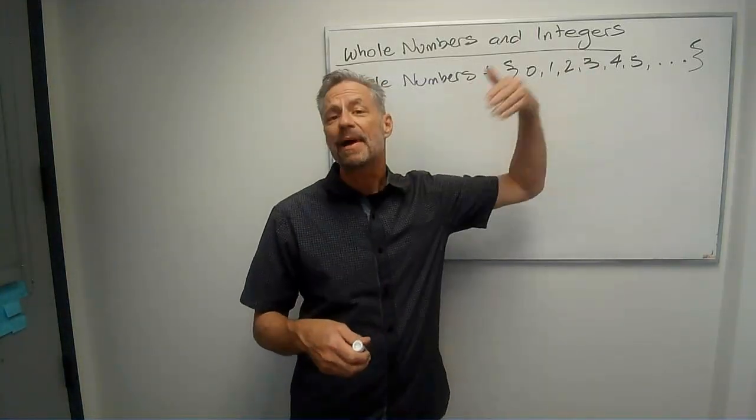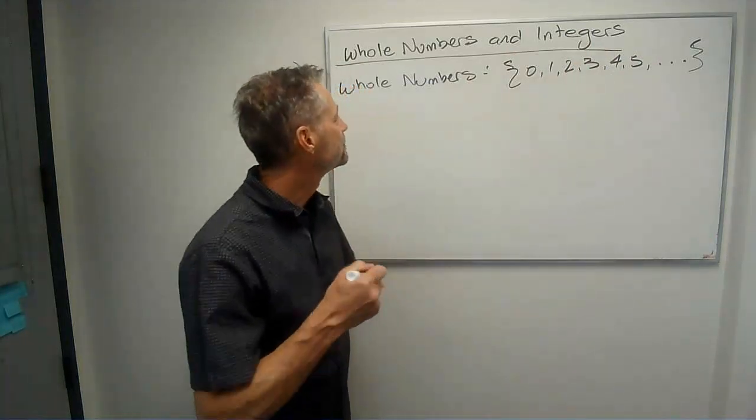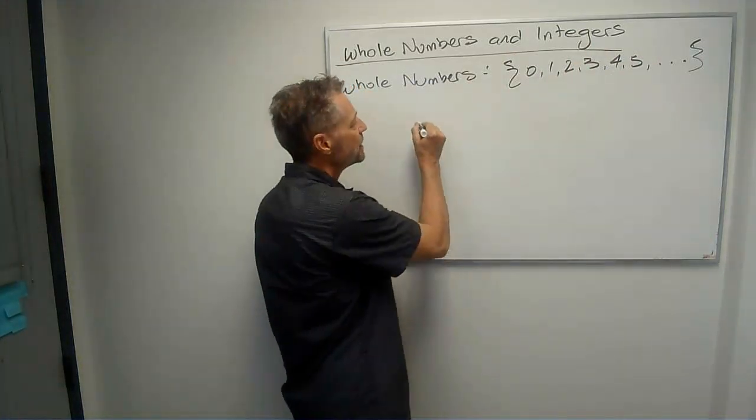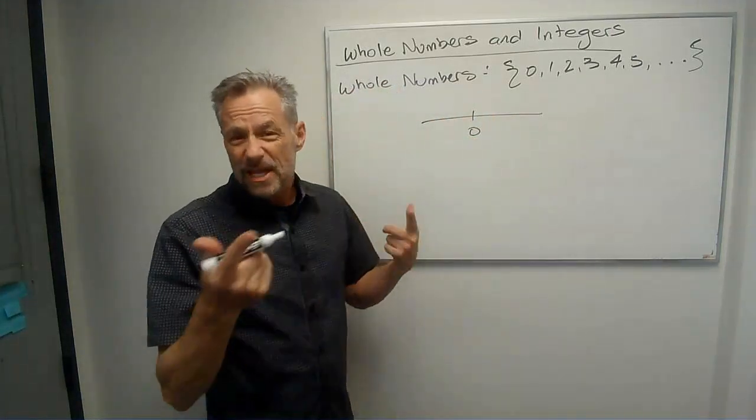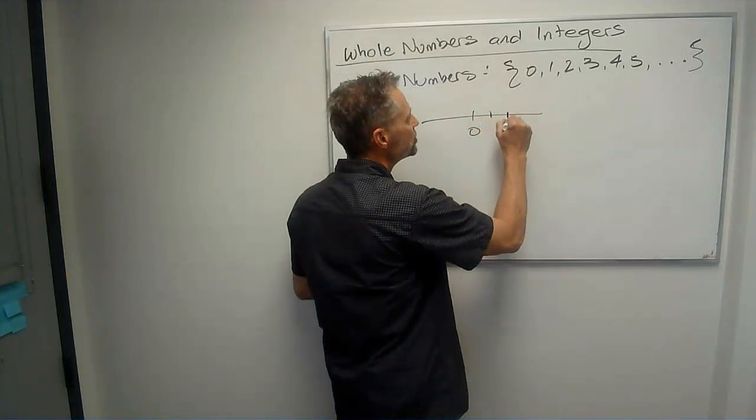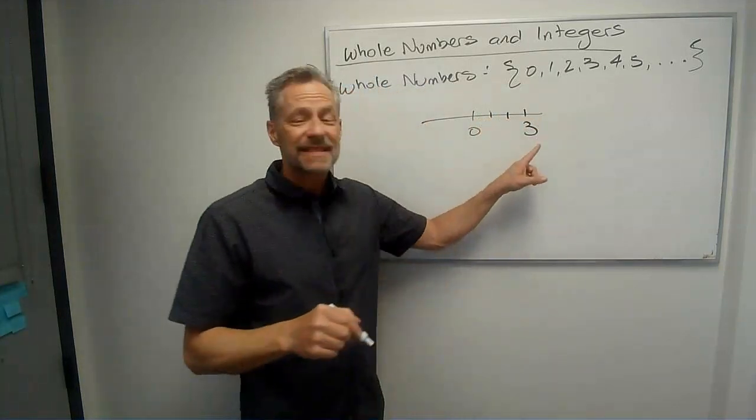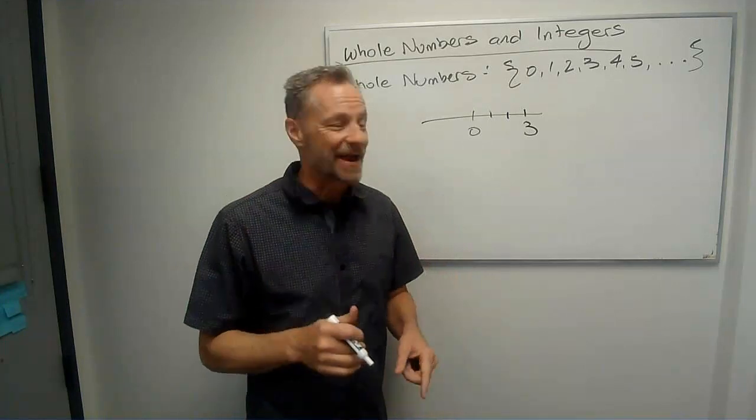The dot, dot, dot means that pattern continues on forever. Okay, if we take a number line and put 0 right in the middle, and then we go out, say, 3 units to the right, 1, 2, 3, well, that would be the integer 3, rather.